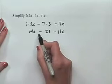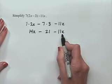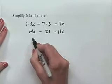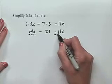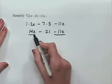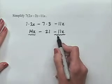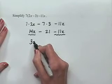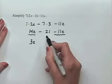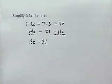We cannot combine the constant value of negative 21 with either of the other terms, as they both have the variable x. Instead, 14x and negative 11x are like terms. We combine their coefficients: 14 minus 11 equals 3, carrying down the variable x. So 14x minus 11x is 3x, and the subtraction of 21 remains, giving us 3x minus 21.